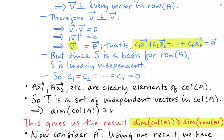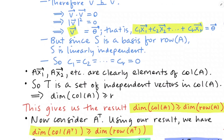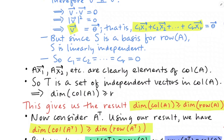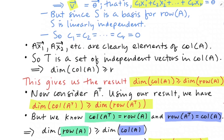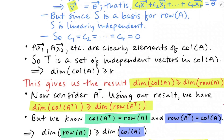Now we're going to think about A transpose and use that result — because it's going to be really important. Using that result, the dimension of the column space of A transpose is at least the dimension of the row space of A transpose. But we also know that the column space of the transpose is the row space of the original, and that the row space of the transpose is the column space of the original. So that's telling me that the dimension of the row space is greater than or equal to the dimension of the column space. But previously I said the dimension of the column space is greater than or equal to the dimension of the row space, and the only way both of these things can be true at the same time is for them to be equal.